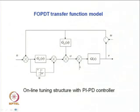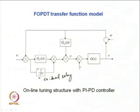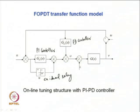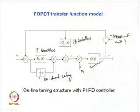To identify the transfer function model of a process dynamics, we will employ an ideal relay in parallel with the PI controller. The PD controller will also be present during the relay experiment. This scheme is used for identification and estimation of the first order plus dead time transfer function model for the real-time process. M stands for measurement noise and L stands for static load disturbance.